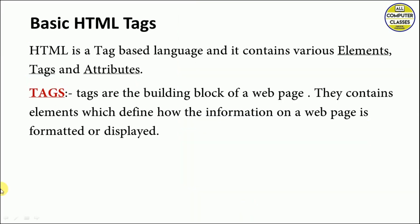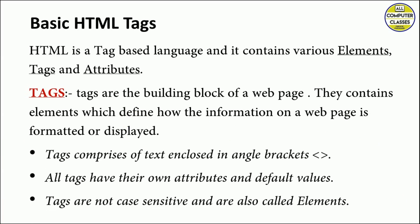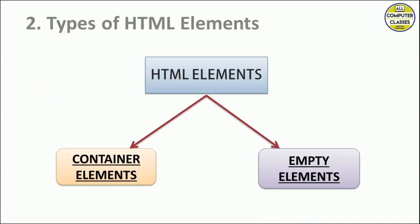Next, basic HTML tags. HTML is a tag-based language — it contains various elements, tags, and attributes. Tags are the building blocks of a web page. Tag elements contain elements which define how information on a web page is formatted or displayed. A tag comprises text enclosed in angular brackets. Tags are not case sensitive and are also called elements — you can write tags in capital or small letters.